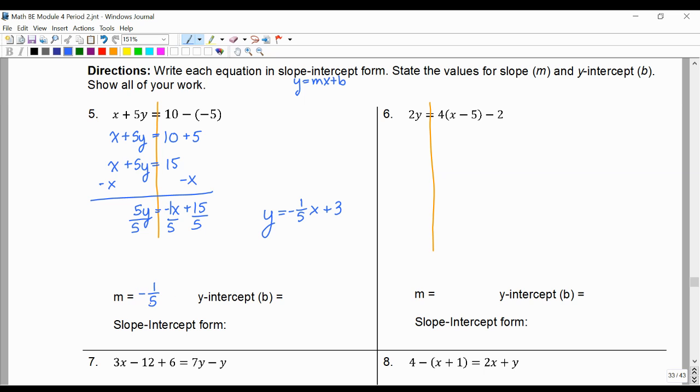Negative 1/5 without the x, 3, or (0, 3), and y equals negative 1/5x plus 3.